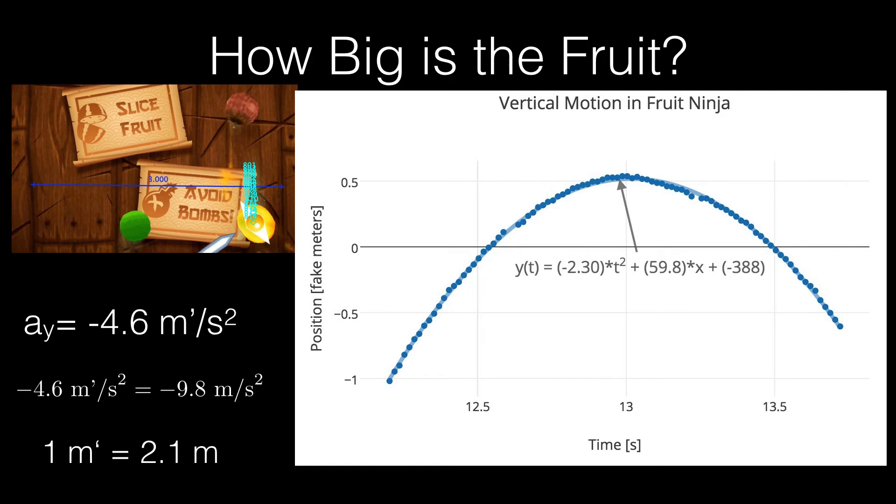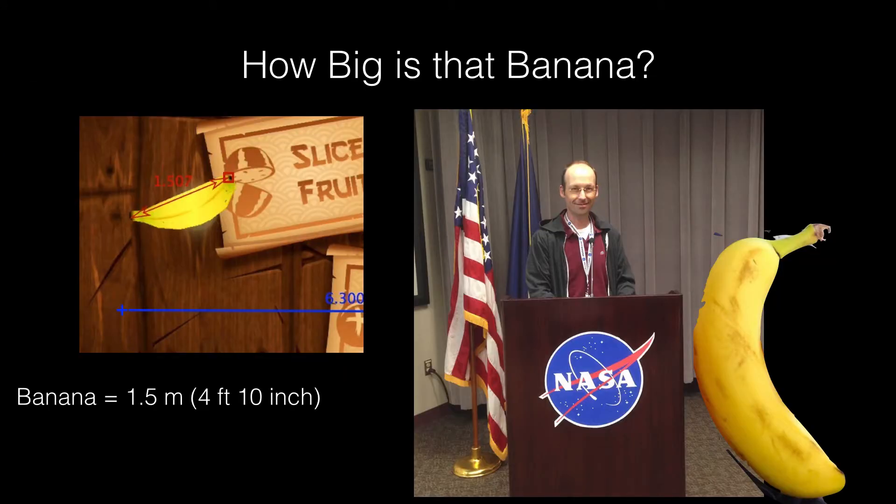So what does that mean? Who cares how big that is? Well, let's see what matters after that. Now I can go measure the actual size of the fruit. Here's a banana. And you see a scale in there. It's 1.5 meters long. And that's 4 feet 10 inches for America. So here's a picture of me at Stennis NASA and next to a 4 foot 10 inch banana. Yep. That's a big banana.